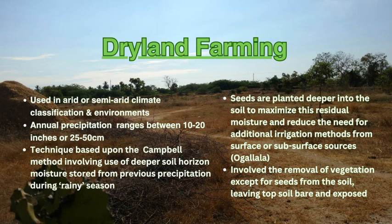Farmers turned to dry farming or dryland farming, which had long been used in arid and semi-arid regions. This method accesses deeper moisture stored in soil layers from previous rain events, rather than relying on outside irrigation. The Ogallala Aquifer beneath most of the Great Plains only began to be widely used for irrigation after the 1930s, so there was pressure to find water sources as the drought extended.